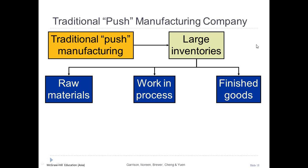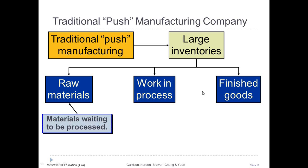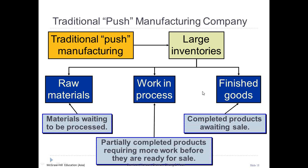Raw materials are the materials used to make a product. Work in process inventories consist of units of product that are only partially complete and will require further work before they are ready for sale to customers. Finished goods consist of units of product that have been completed but not yet sold to customers.